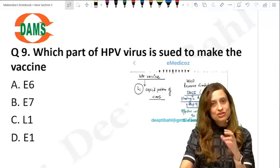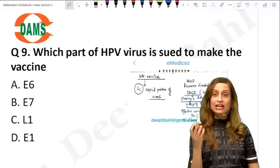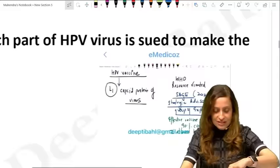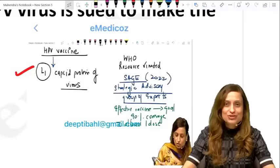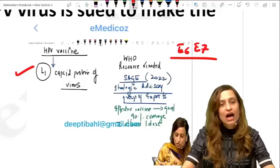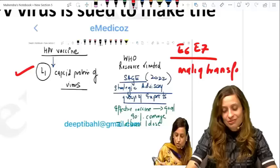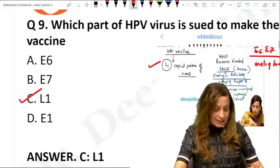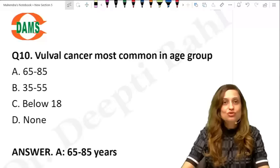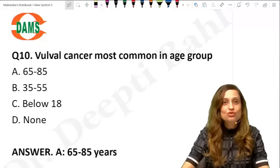Which part of the HPV virus is used to make the vaccine? It is the L1 capsid protein of the virus which is used to make the vaccine. E6 and E7 are viral proteins required for malignant transformation. The best answer is L1 capsid protein.